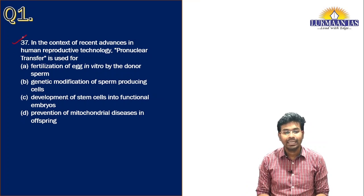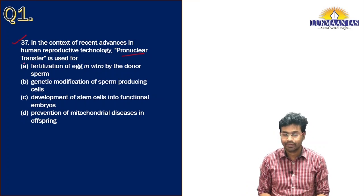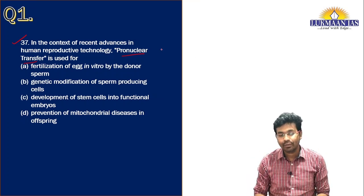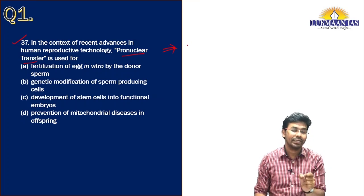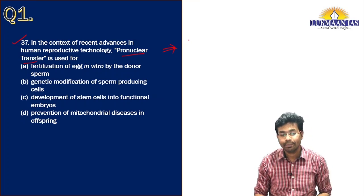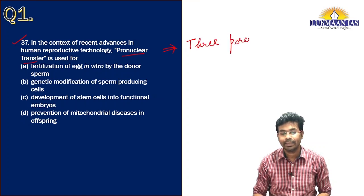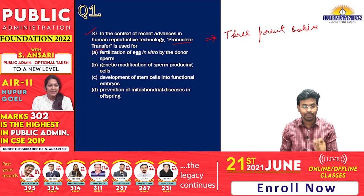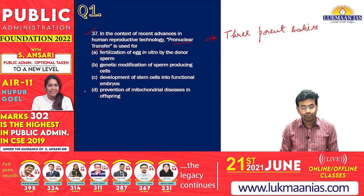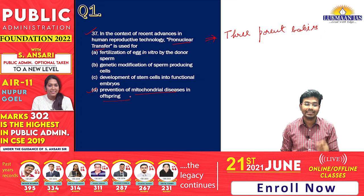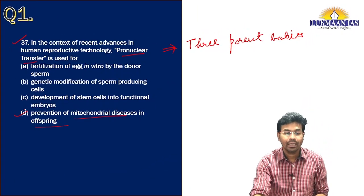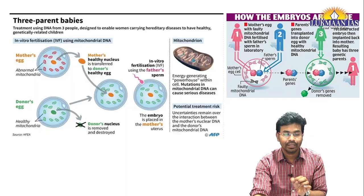The first question is about pronuclear transfer. What do we mean by pronuclear transfer? Pronuclear transfer technology is primarily utilized for the purpose of creating three-parent babies. It is used for prevention of mitochondrial diseases in offspring. The correct answer for this question is option D.